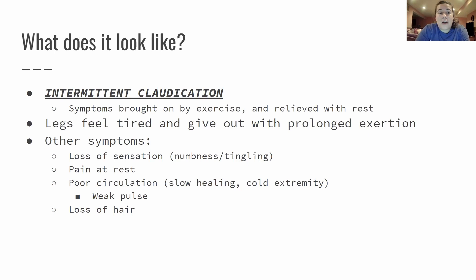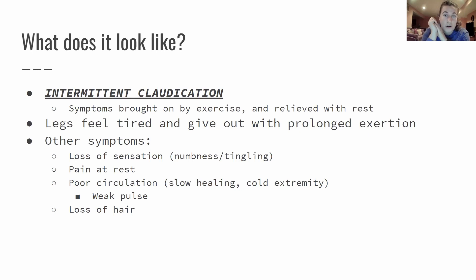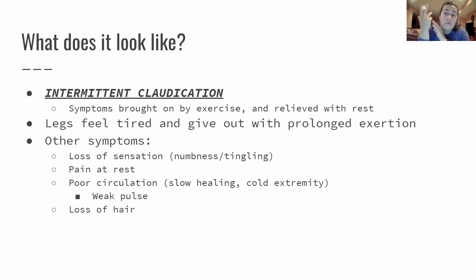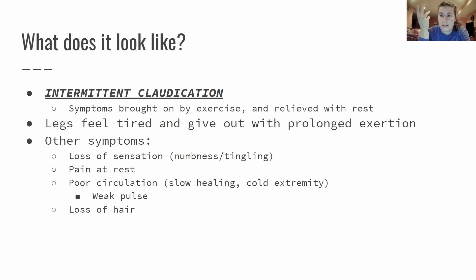The biggest symptom to talk about is intermittent claudication. This is where the claudication symptoms start to happen in the blood vessels intermittently - it could happen for a couple minutes and go away, or go on and off depending on what you're doing. Symptoms are usually brought on by exercise and relieved with rest. As the person starts moving, the blood vessels narrow and then as they rest it can relax and blood flow keeps going again. The patient will describe feeling tired and weak, like their legs are going to give out with any prolonged exertion.